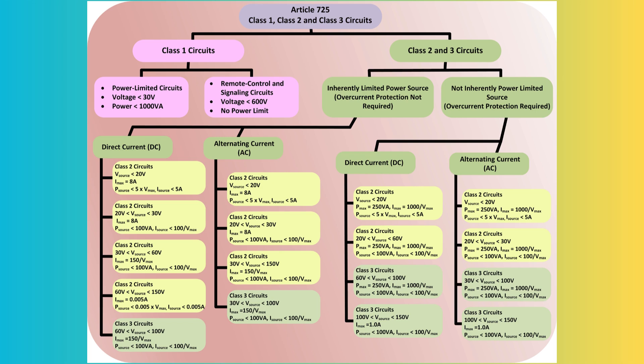Article 725 of the Electrical Code specifically addresses low-power circuits that are not an integral part of a device or appliance. These circuits, including those used for burglar alarms, access control, sound systems, nurse call systems, intercoms, low-voltage industrial controls, lighting dimmer controls, and certain computer networks, are categorized under Article 725. The primary goal of Article 725 is to establish specific conditions that allow low-power circuits to be distinguished from electric light and power circuits based on their usage and power limitations.